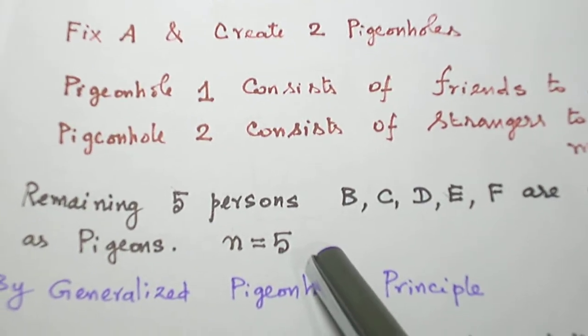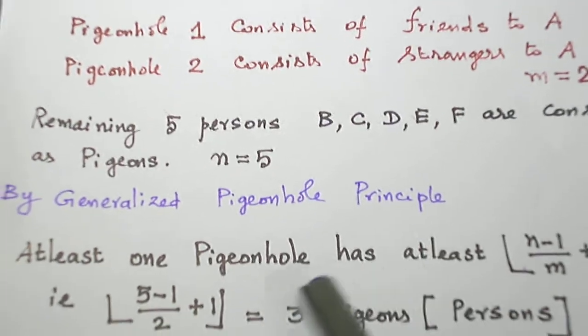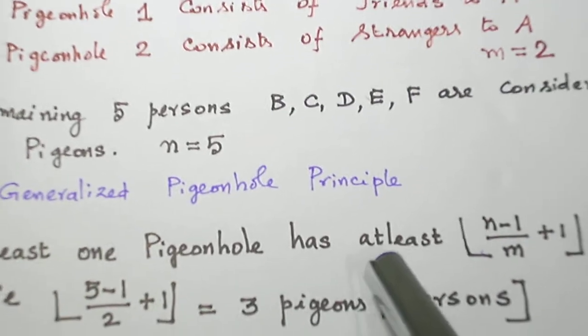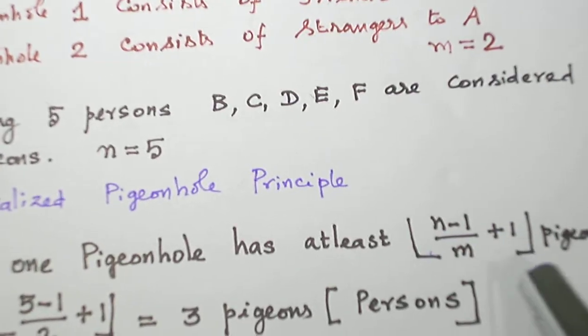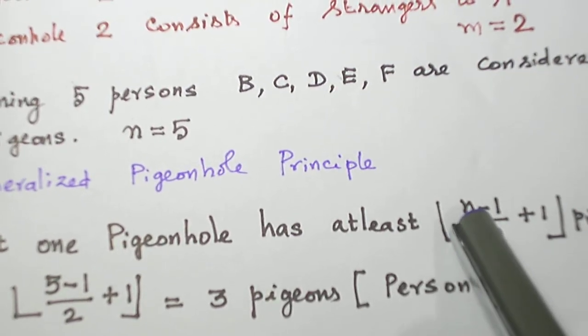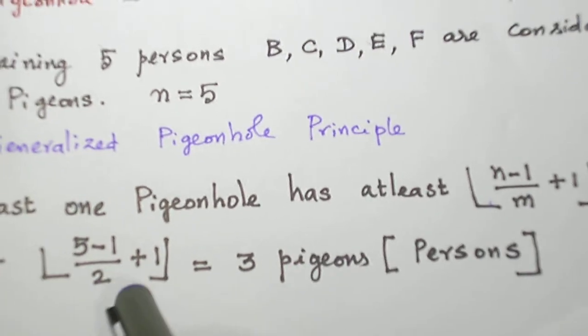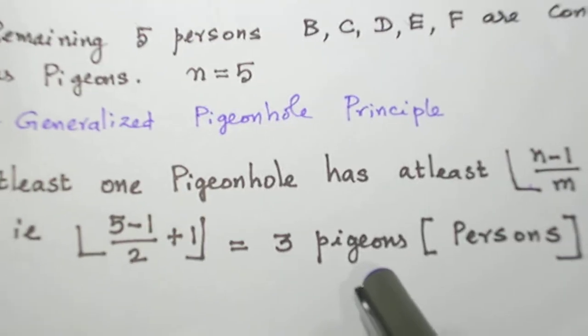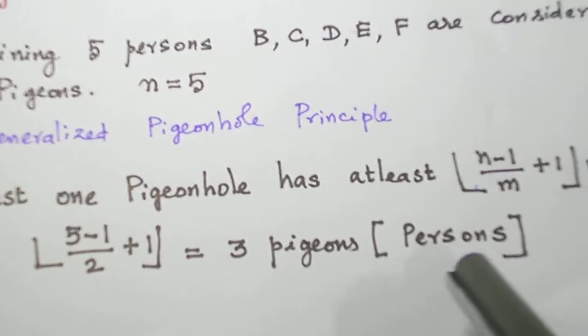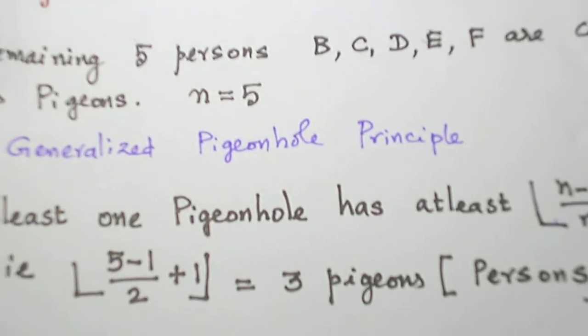So N equals 5. Now by Generalized Pigeonhole, if you apply, at least 1 pigeonhole has at least (N-1)/M + 1 pigeons. So N is 5, M is 2. If you apply, at least 1 pigeonhole has at least 3 pigeons. Here the pigeons are persons, so at least 3 persons a pigeonhole contains.